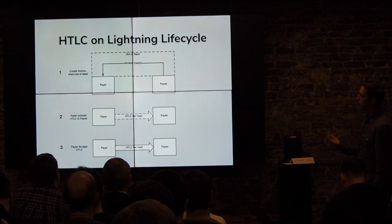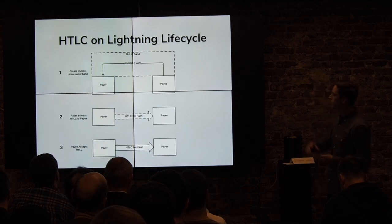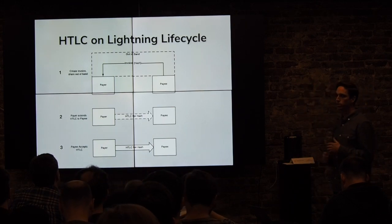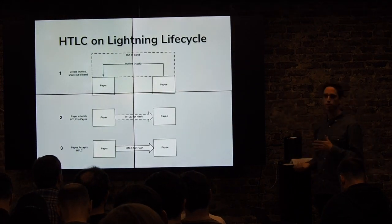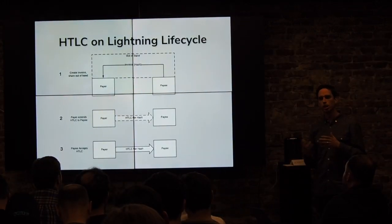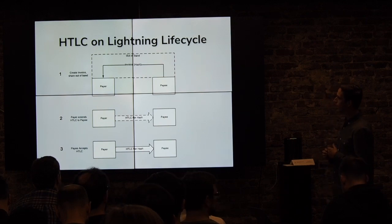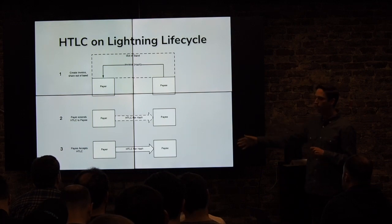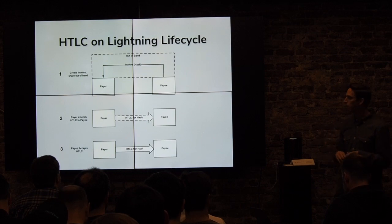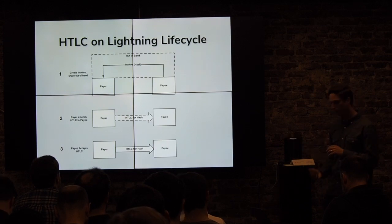When we think about an HTLC on Lightning, it goes through a given lifecycle. Basically the payee creates an invoice, which is a pre-image that they then hash, and then they send the hash of that pre-image to the person who wants to pay them, usually in the form of an invoice encoded via Bolt 11. They send that out of band — you've probably seen them on Twitter, they usually start with LN1. Then the payer can extend an HTLC to the payee, and as soon as the payee accepts it, the payer cannot back out. Until the timeout, the payer can't revoke it, and it's up to the payee to either reveal the pre-image or not.